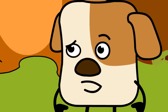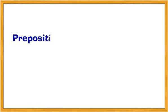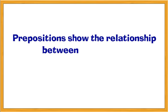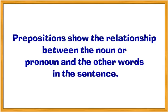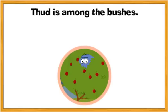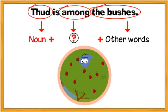"But what are they? What are prepositions?" Prepositions show the relationship between the noun or the pronoun and the other words in the sentence. Let's take an example. Thad is among the bushes. We know that Thad is the noun and the bushes are the other words in the sentence. So then, what is "among"? Among shows the relationship between the nouns and the other words in the sentence. Therefore, among is a preposition.